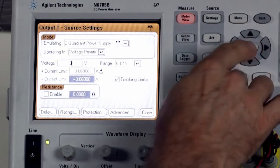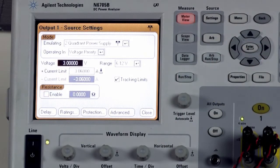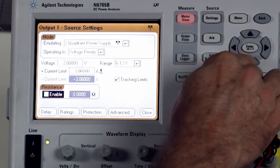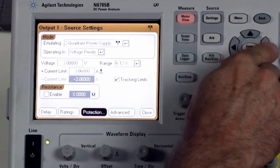If you wanted to, you could change the current limit but I'm going to leave that as is. There is one other place that I would like to make a selection and that is in the advanced menu.